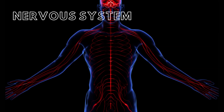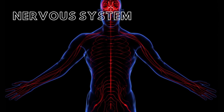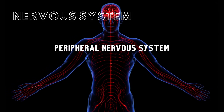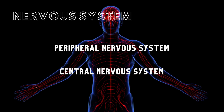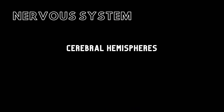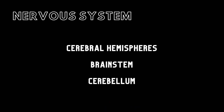The nervous system is comprised of two subdivisions: the peripheral nervous system and the central nervous system. The PNS contains all of the nervous tissue outside of the CNS. The CNS is composed of the spinal cord and the brain. Within the brain, there are the cerebral hemispheres, the brainstem, and the cerebellum.